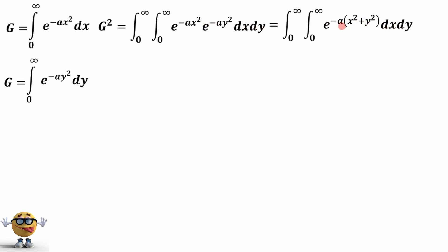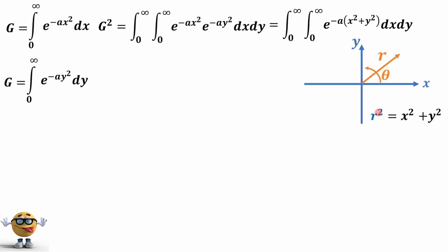Now this is in terms of x and y. We're going to change our coordinate system to polar coordinates. As x goes from zero to infinity and y goes from zero to infinity, we're dealing with the first quadrant — that's like having r go from zero to infinity, and theta go from zero to pi over two. Using the Pythagorean theorem, we set r squared equal to x squared plus y squared, and to convert to polar coordinates, dx dy is equal to r dr dθ.